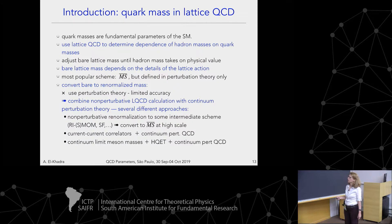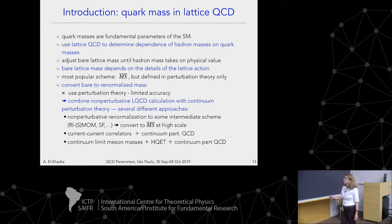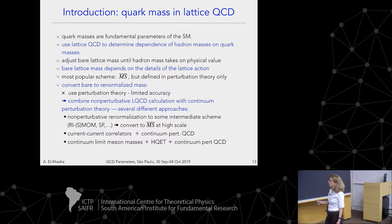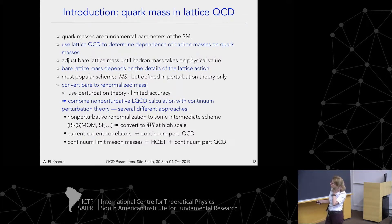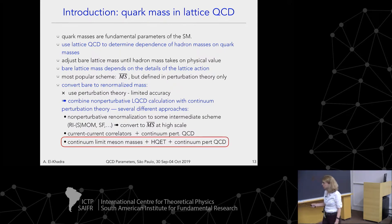Converting directly from bare to MS-bar using lattice perturbation theory limits accuracy because lattice perturbation theory is really hard. But combining the lattice QCD calculation with continuum perturbation theory is much better. There are several approaches: the Alpha collaboration's approach using the Schrödinger functional calculates an intermediate quantity and converts to MS-bar at a high scale. Another approach — the one I'll be describing — calculates something measurable experimentally, describes it in continuum perturbative QCD, and uses the continuum limit to extract the quantities of interest.